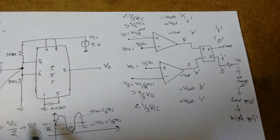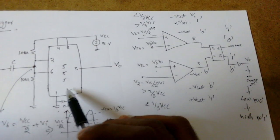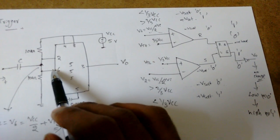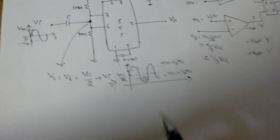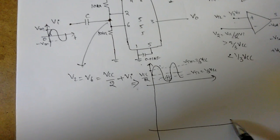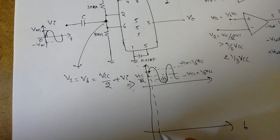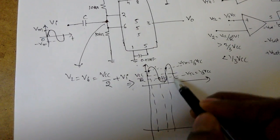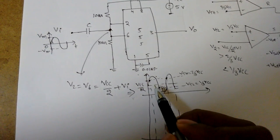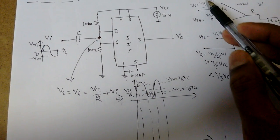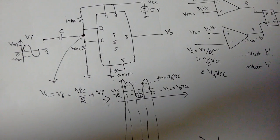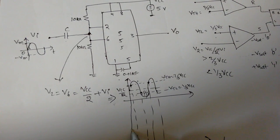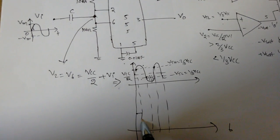So this is how the 555 timer works the moment when we apply some AC signal. If you take the output waveform, there are two levels. Greater than 2 by 3 VCC, less than 1 by 3 VCC, greater than 2 by 3, less than 1 by 3. Now the moment we is greater than 2 by 3 VCC, output is becoming - that means it was previously high, now it will become low.